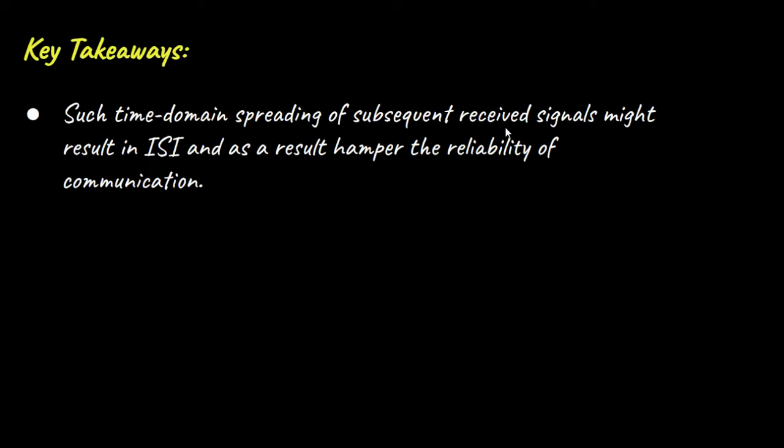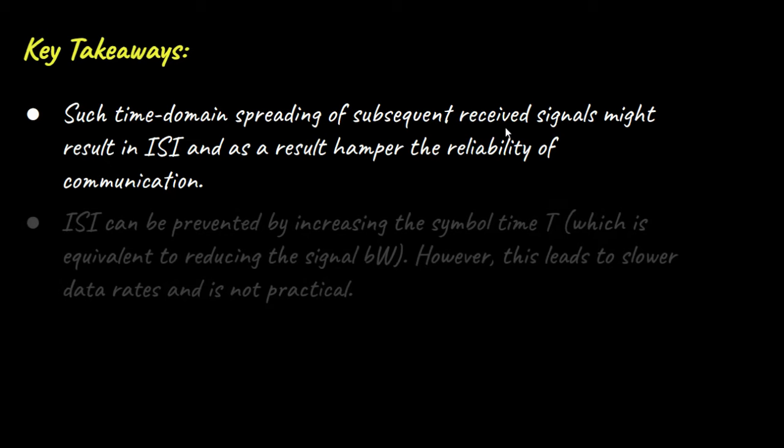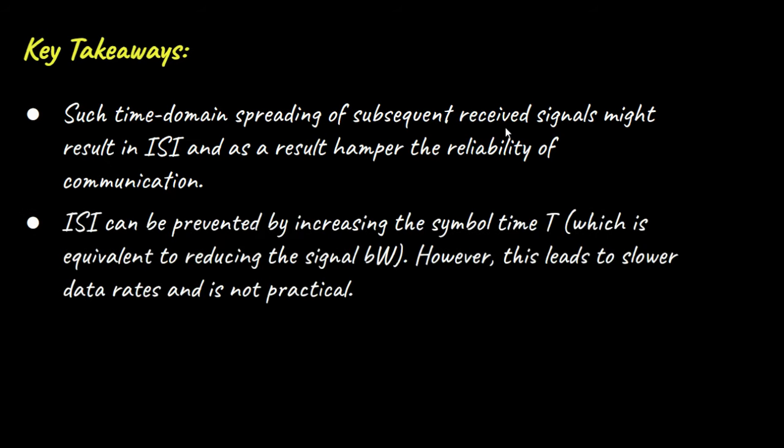Such time domain spreading of the subsequent received signals might result in ISI and as a result hamper the reliability of communication. ISI can be prevented by increasing the symbol time T, which is equivalent to reducing the signal bandwidth. However, this leads to slower data rates and is not practical.